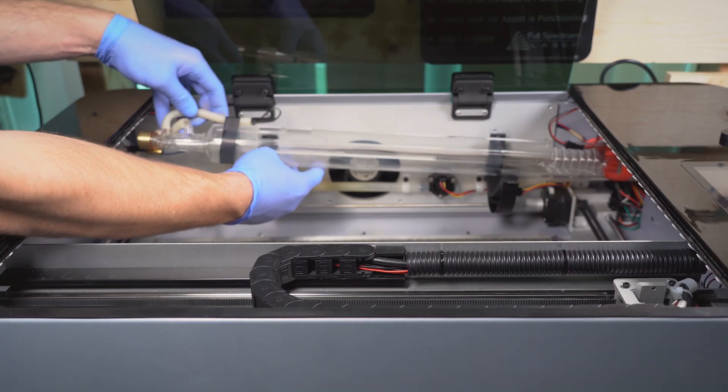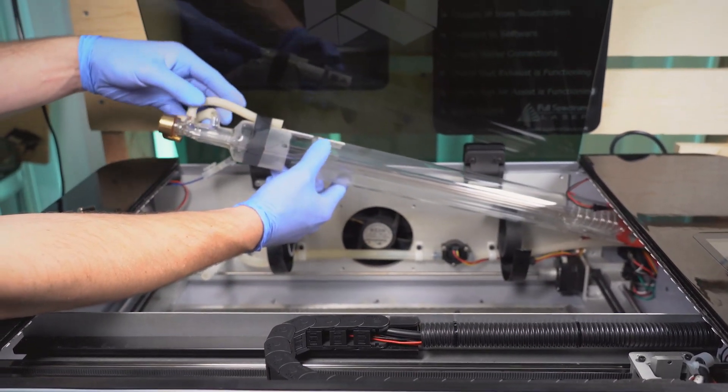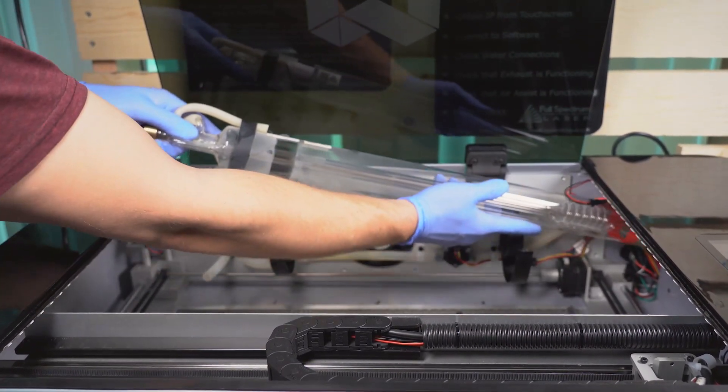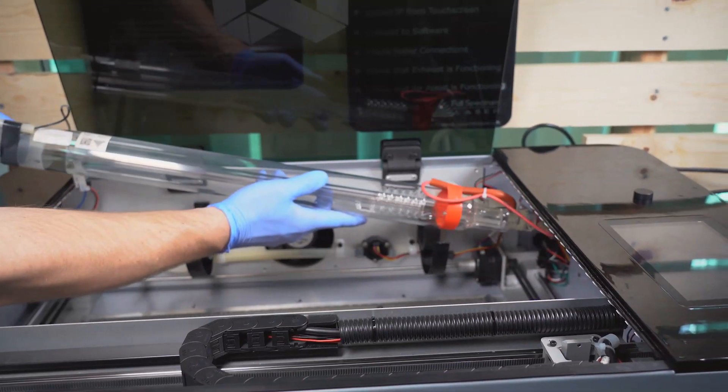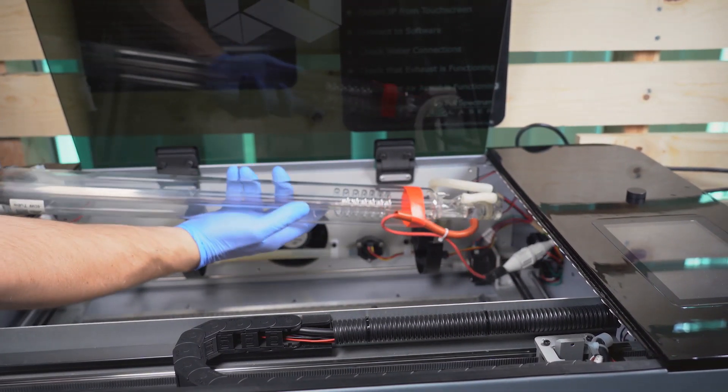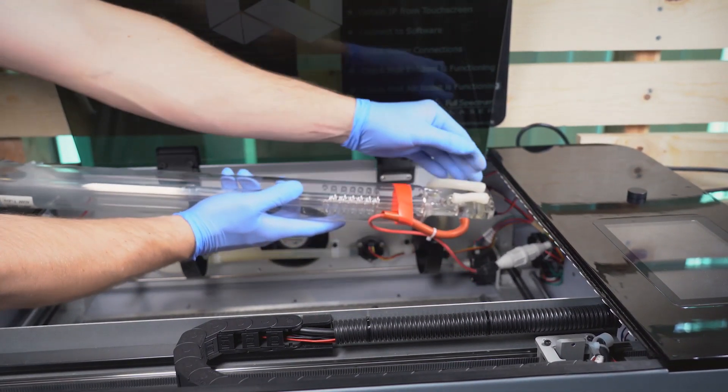Then we're going to tilt the tube, bringing it upwards and pulling out. At this point, we can twist the tube and remove the water line on this side.